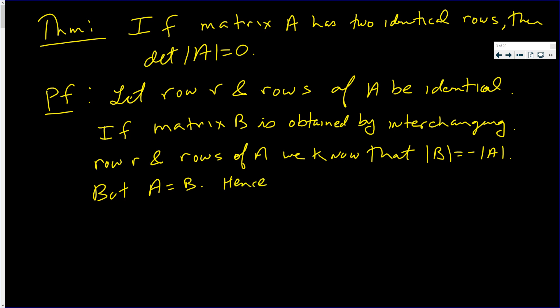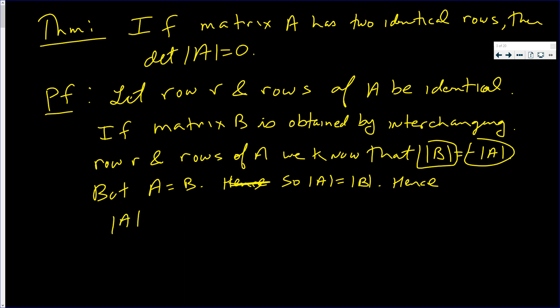the determinant of A is equal to the determinant of B. Hence, now we know that this equals that. This is how I choose to write the determinant of B — because determinant of A equals the determinant of B — and I choose to write the right-hand side exactly as it says.